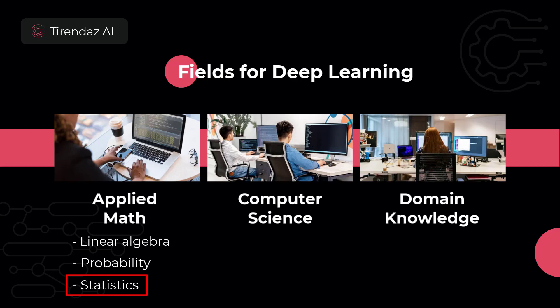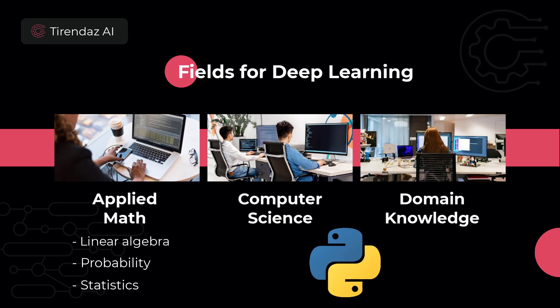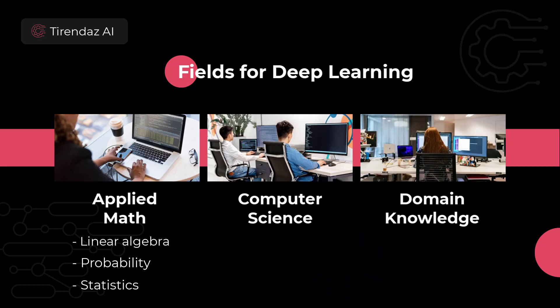Another pillar of deep learning is computer science. For deep learning, you need to learn a programming language — the most used is Python. Since Python's syntax is easy, many libraries are written in this language. You also need to know parallel programming techniques to carry out your deep learning analyses faster. Another field you need to know is domain knowledge. Big data is very important for deep learning, and to build a good model, you need to understand and interpret data related to the field you are working on. If you don't gain insight into the dataset, you can get help from a domain expert.